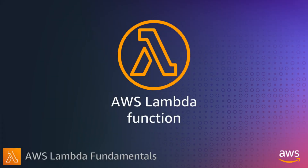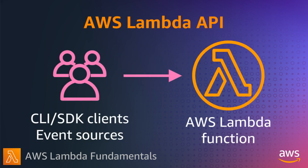There are two parts to consider for Lambda networking: traffic getting into a function as part of an invoke, and network traffic that your function code initiates. First of all, the only way to invoke a function is via the Lambda API, which is the front door to Lambda for all clients and services. These include CLI and SDK calls, as well as services that invoke your function in response to events. You can't SSH into a Lambda function or invoke it via any other path.